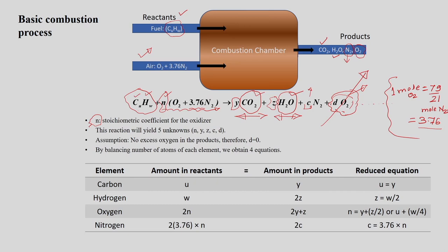There are 5 unknowns in this stoichiometrically balanced equation: N, Y, Z, C, and D. These must be estimated to find the exact stoichiometric balance. Once estimated and substituted back, we get the stoichiometrically balanced equation for the combustion of the hydrocarbon fuel.